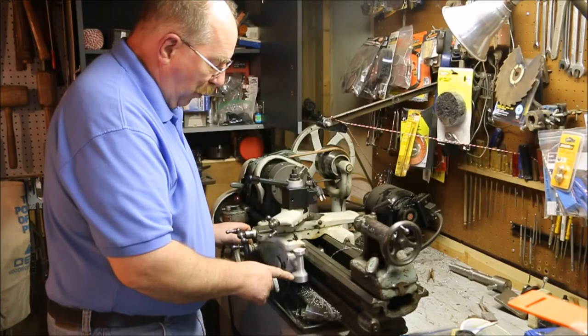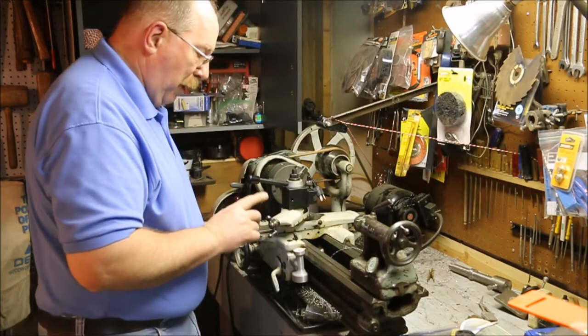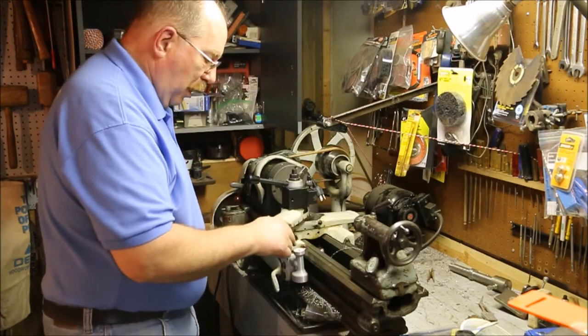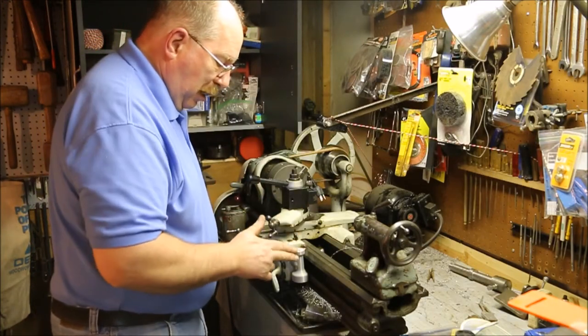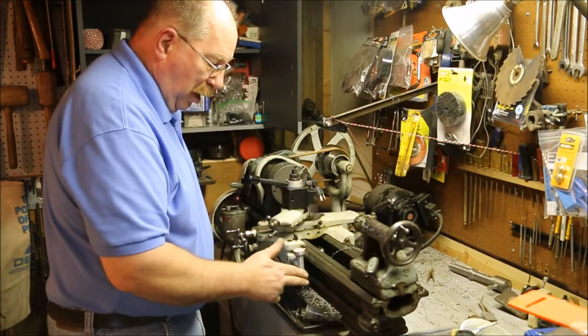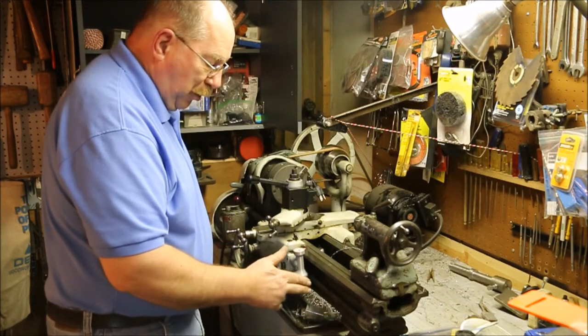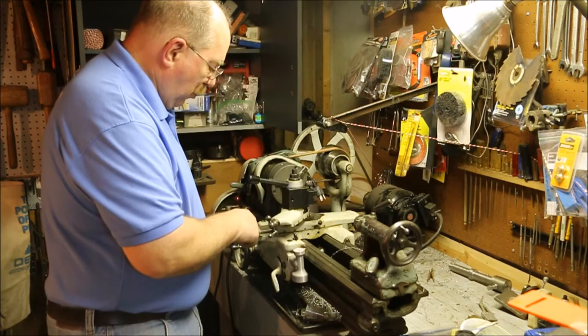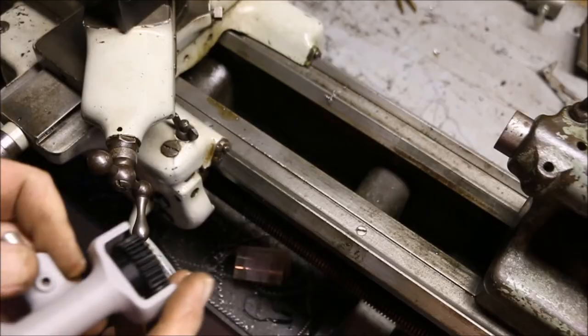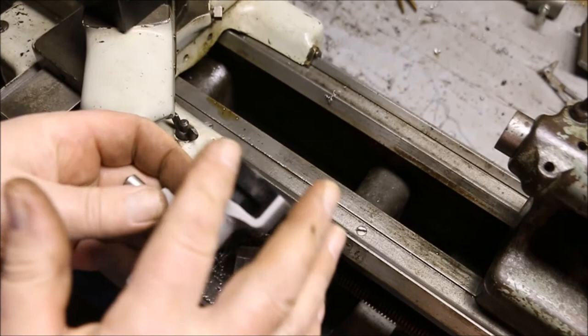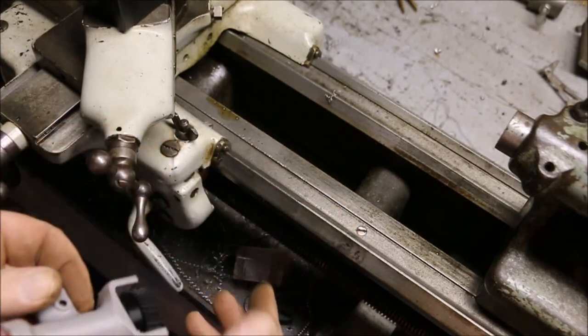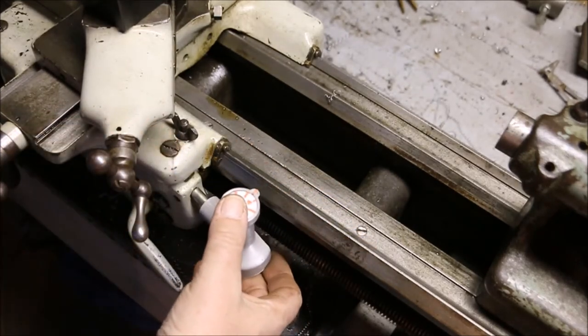This little item right here is called a threading dial. The way it works is it has four positions on it that tells you the relative position of the lead screw in relationship to the position of the cross feed. The unit has a small gear down here at the bottom that engages the lead screw.